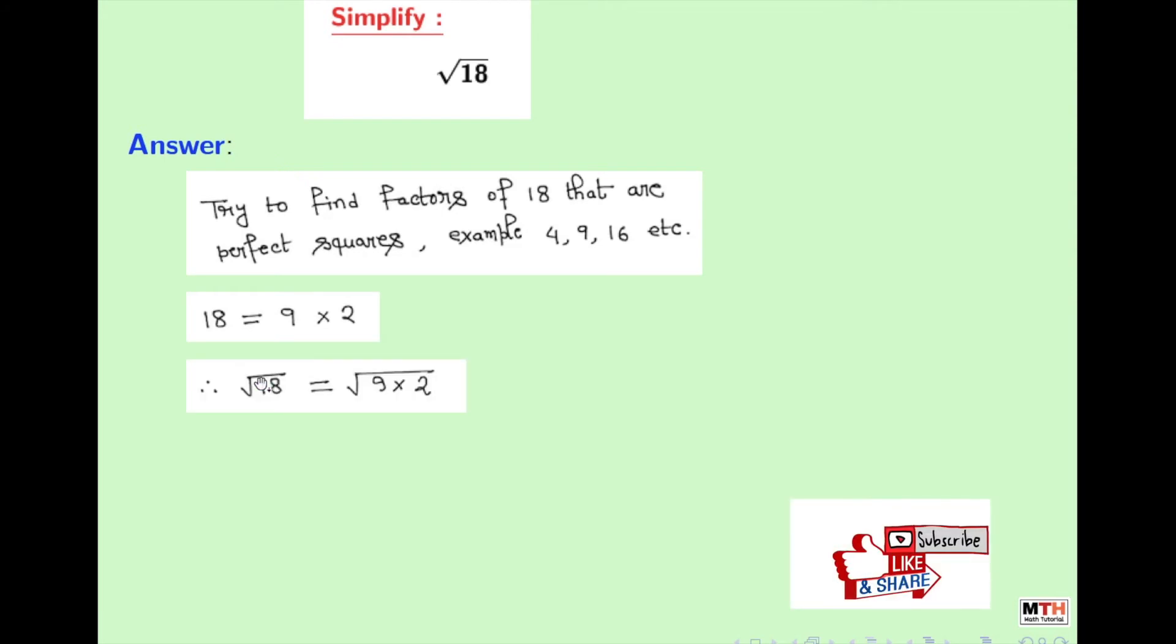And we will write it as square root of 18 is equal to square root of 9 times 2, which means square root of 9 times square root of 2. As we know that square root of x times y...